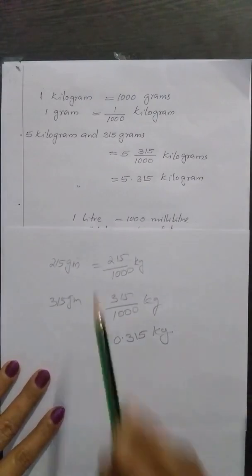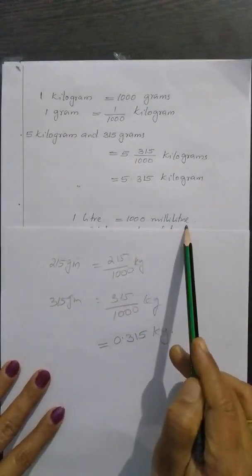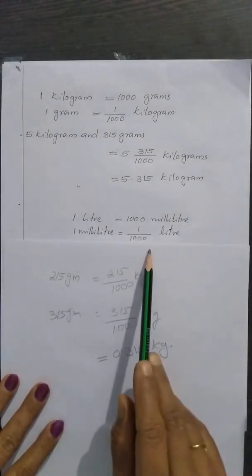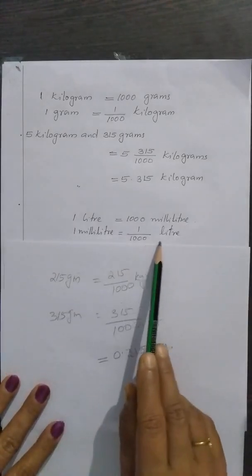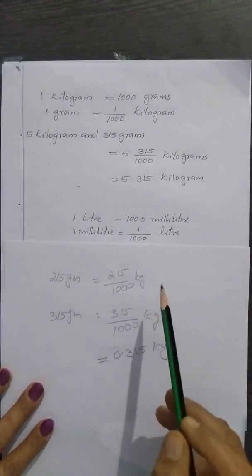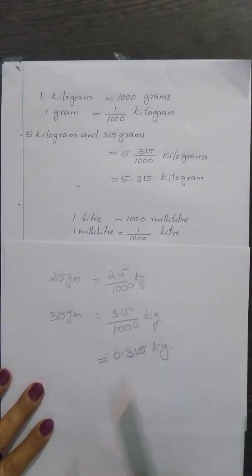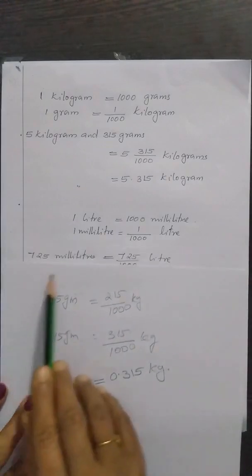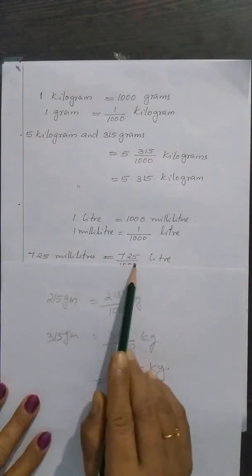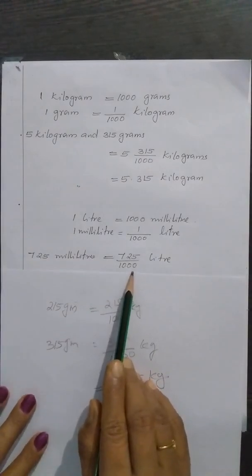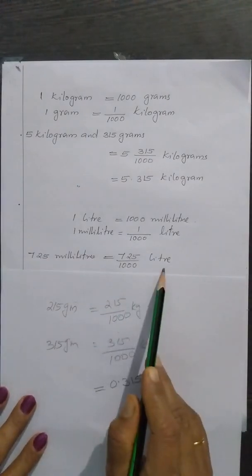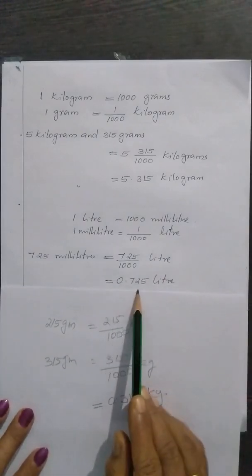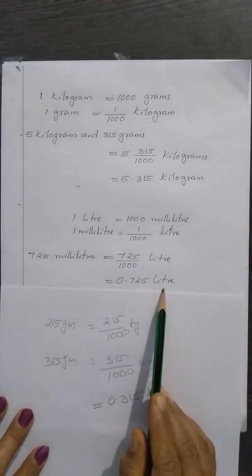1 litre is equal to 1000 milliliter. So, 1 milliliter is equal to 1 divided by 1000 litre. So, 725 milliliter is equal to 725 divided by 1000 litre, which is equal to 0.725 litre.